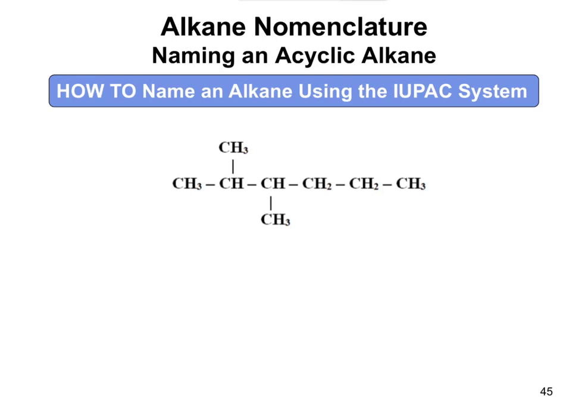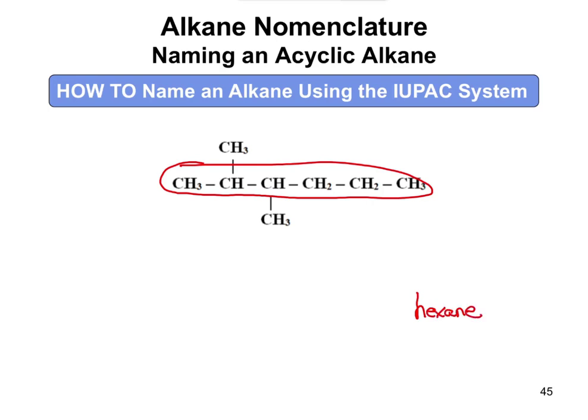We're going with a six-carbon chain. We could draw it straight across or we could go up — I'll go straight across. All of those carbons I've circled are attached to hydrogens, and naming all of those is included in the hexane name. Hexane tells us we have six carbons and it's an alkane — no double bonds. Next, we need our substituents. There's a CH3 and a CH3, so each of those are methyl groups.